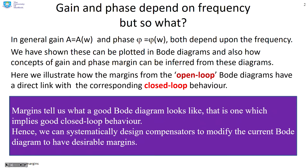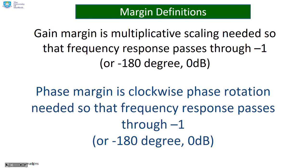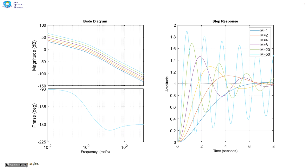So we can now design systematically by aiming to modify the Bode diagram to have the desirable margins. As a reminder: the gain margin is the multiplicative scaling needed so that the frequency response passes through minus one, and the phase margin is the clockwise phase rotation needed so that the frequency response passes through minus one.